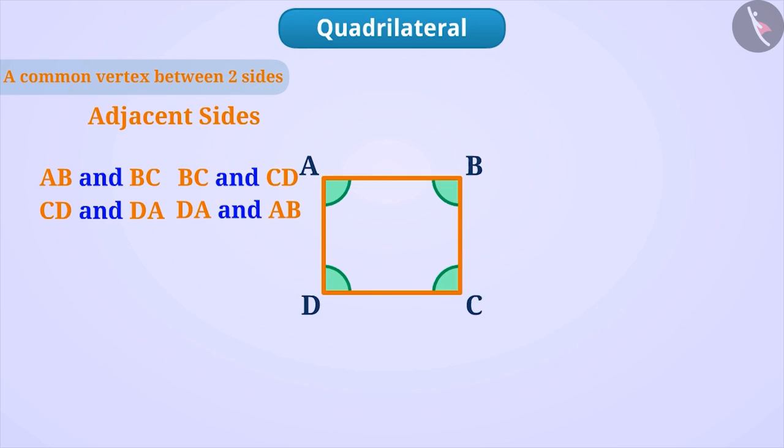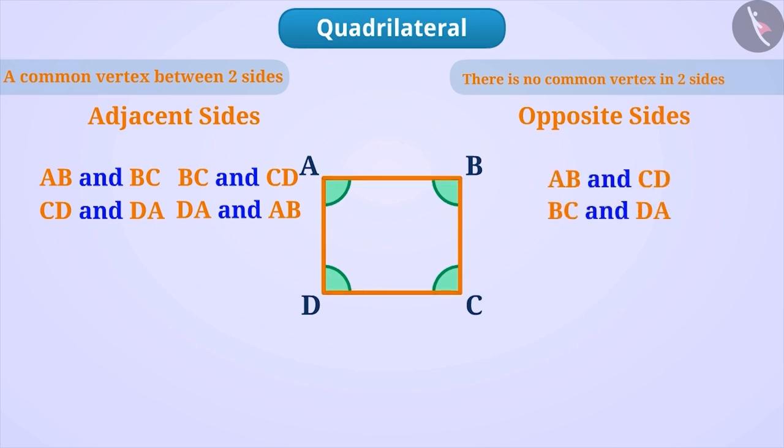Similarly, if there is no common vertex for the two sides of the quadrilateral, then such sides are called opposite sides such as AB and CD or BC and DA.